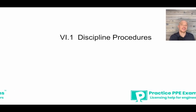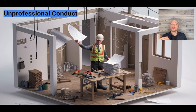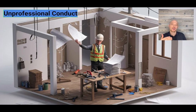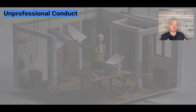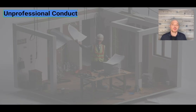The first topic is on discipline procedures. Let's begin by looking at a couple of key terms. Unprofessional conduct, or professional misconduct, is a term used to describe any action that would be reasonably regarded as dishonorable, disgraceful, or unprofessional. It's one of the most common types of complaints received by associations. Examples include, but are not limited to: